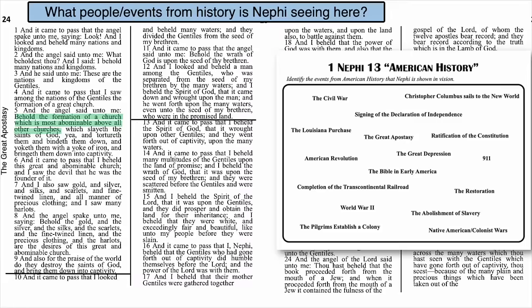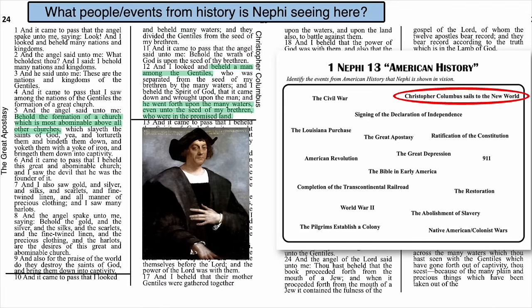Verses 10-12: 'I looked and beheld many waters, and they divided the Gentiles from the seed of my brethren. And it came to pass that the angel said unto me, Behold, the wrath of God is upon the seed of thy brethren. And I beheld a man among the Gentiles, who was separated from the seed of my brethren by the many waters. And I beheld the Spirit of God, that it came down and wrought upon the man. And he went forth upon the many waters, even unto the seed of my brethren, who were in the promised land.' Who is Nephi being shown here — this man who goes forth upon the many waters? It's Christopher Columbus and his journey across the Atlantic to the New World.